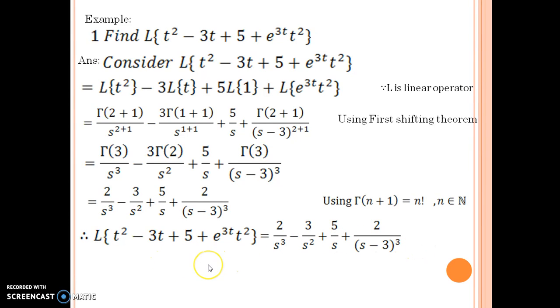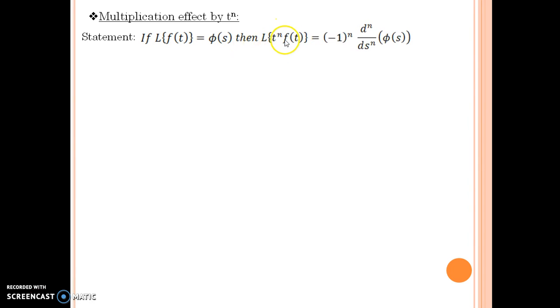Let us see the next thing. We have multiplication effect by t^n. What is this multiplication effect? The statement states: if Laplace of f(t) equals φ(s), then Laplace of t^n·f(t) equals (-1)^n times the nth derivative of φ(s).